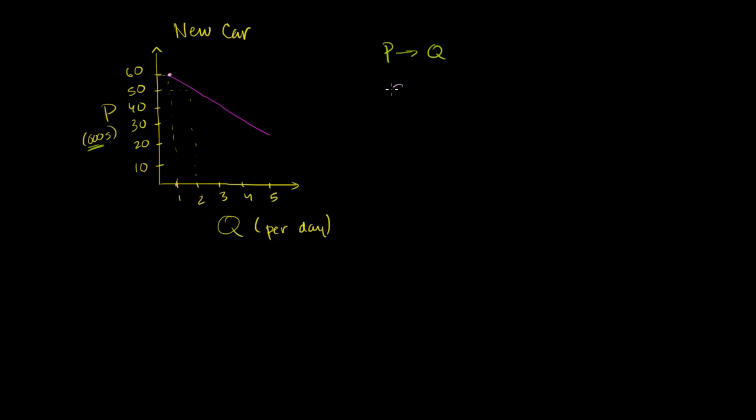We're going to think about it in terms of quantity driving price. And to think of it that way, imagine that we are the producers of this given model of a new car. And we go the other way.